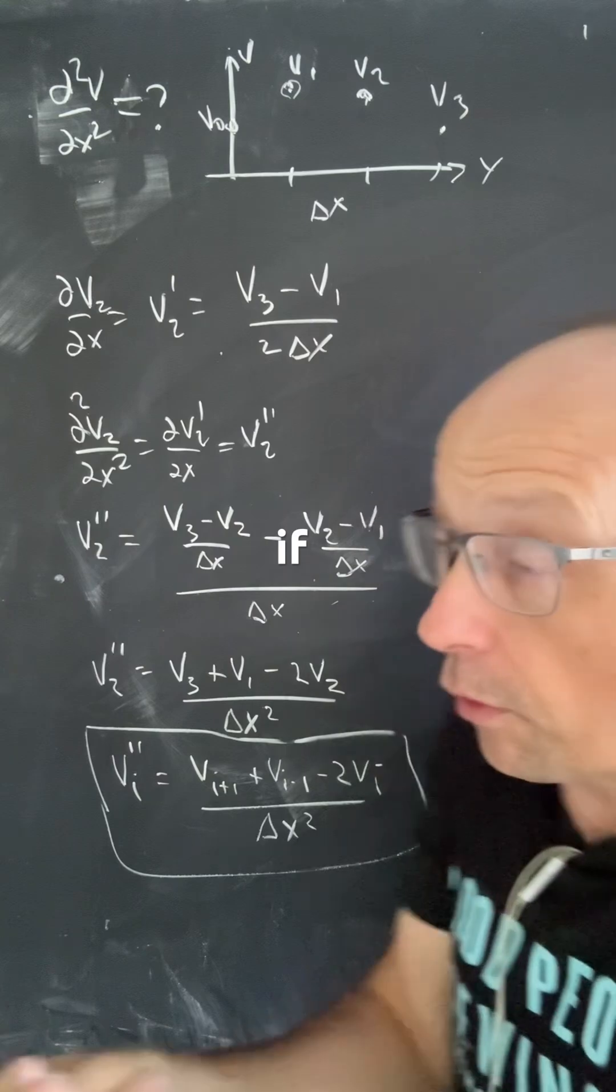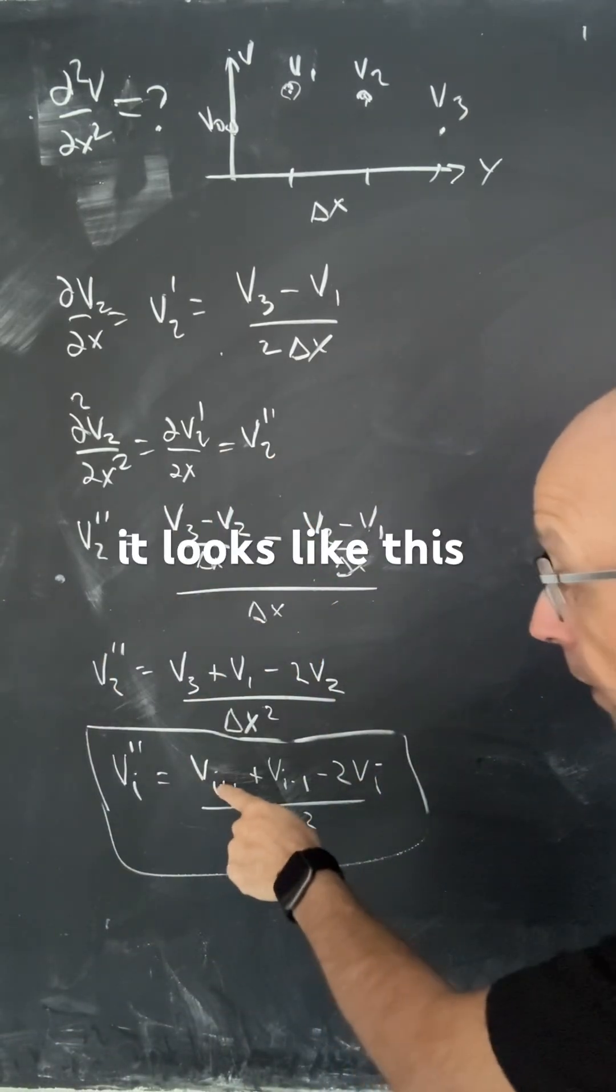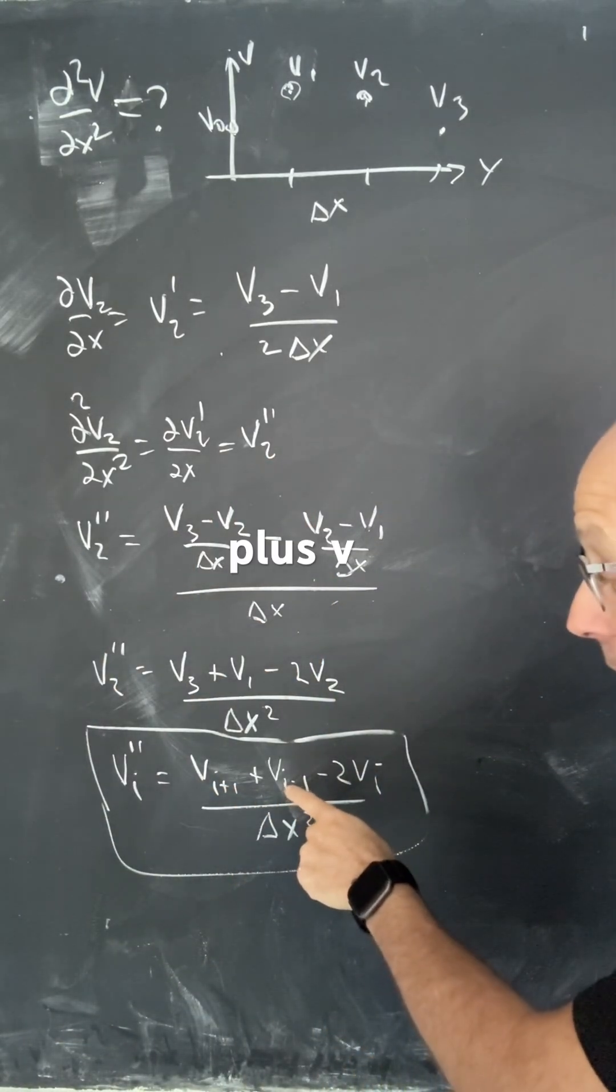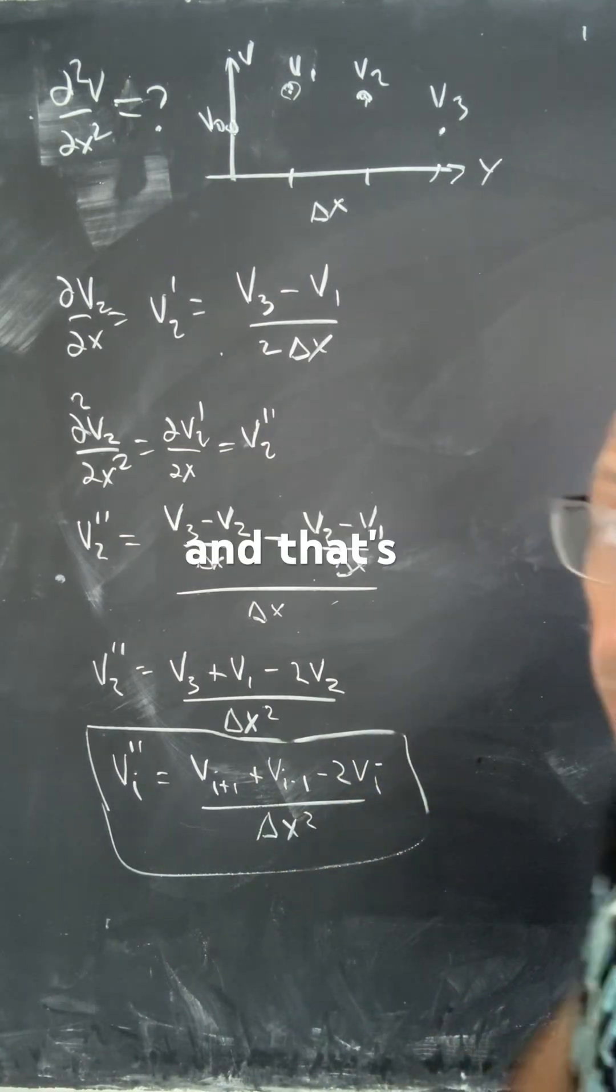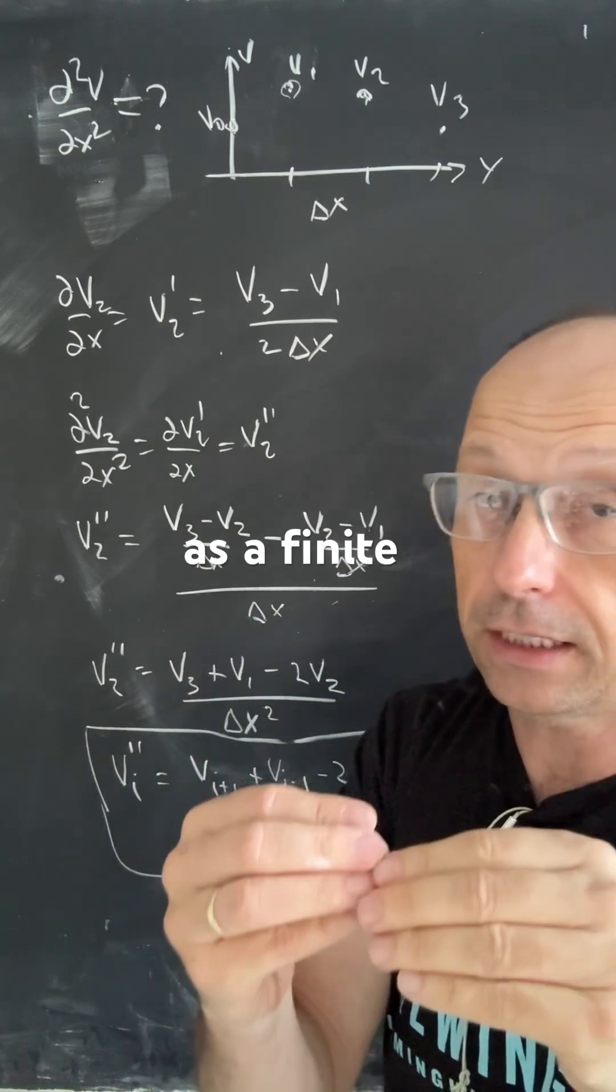In general, if we want to do it for the i-th element, it looks like this. It's v_{i+1} plus v_{i-1} minus 2v_i, all over delta x squared. And that's the second derivative as a finite difference.